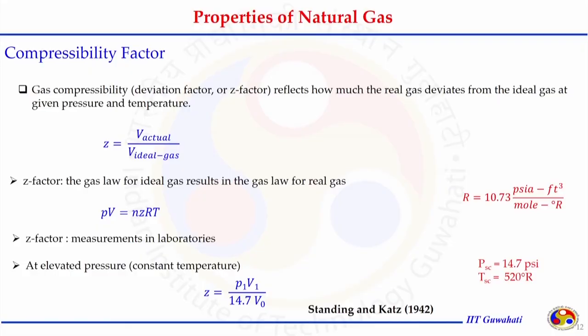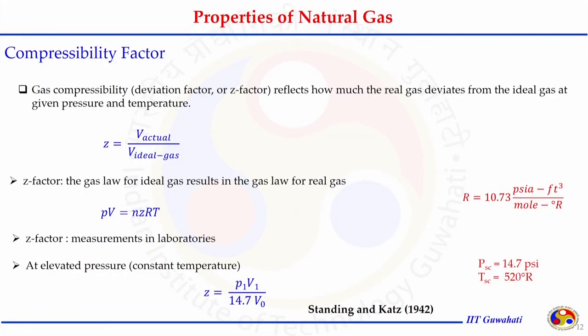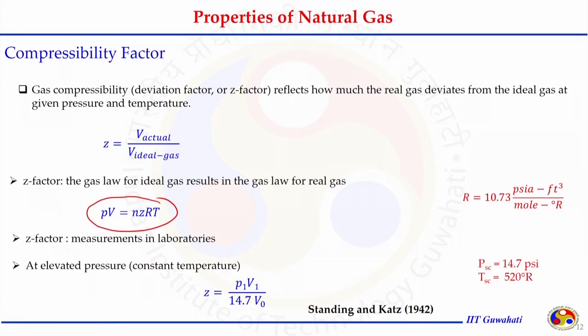By mathematical expression, the compressibility factor Z is the ratio of the actual volume occupied by the gas divided by the volume the same amount of gas would occupy if it were ideal. This modifies the ideal gas law to PV = nZRT where Z is the compressibility factor. The value of Z can be measured in the laboratory, but for different compositions and conditions, correlations or charts are more practical.